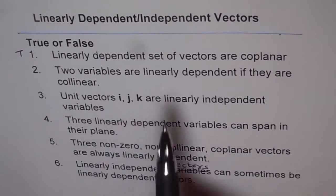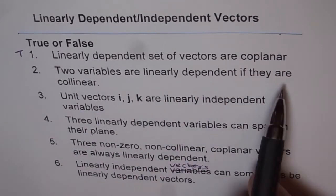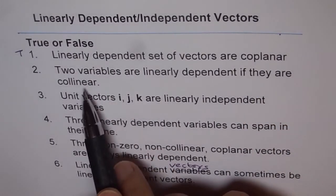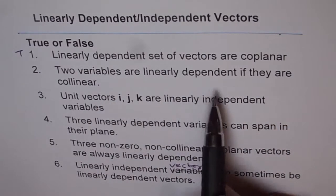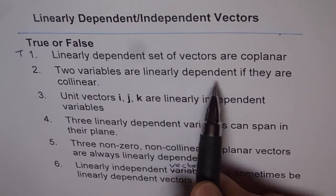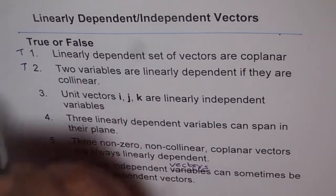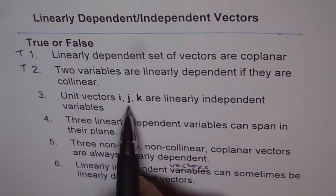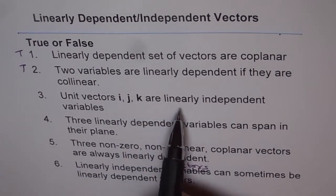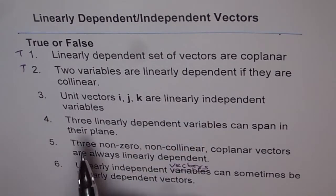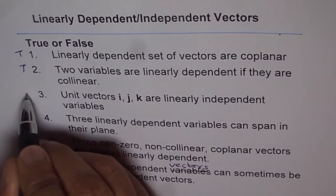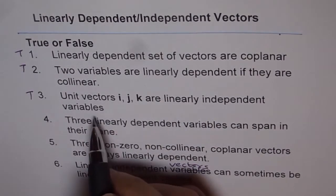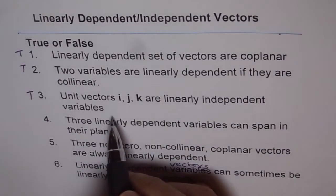Question 2: Two vectors are linearly dependent if they are collinear — that is also true. For two vectors to be linearly dependent, they must be collinear. Question 3: Unit vectors I, J, K are linearly independent — that is also true. Since they are linearly independent, they can span R3 and they form the basis for R3.